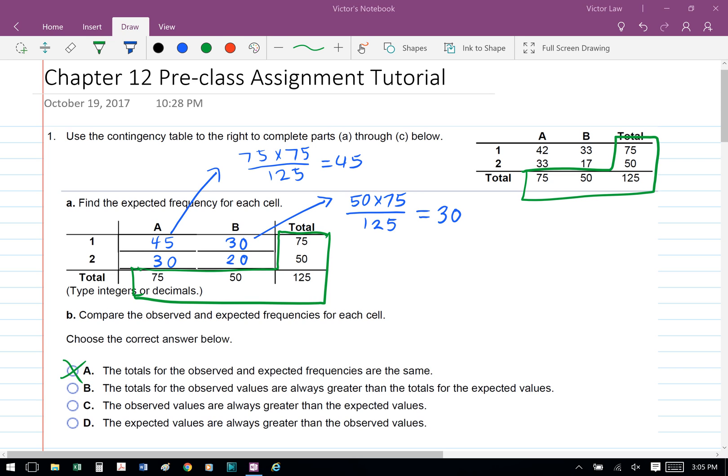We can see that both have 75 and 50 for A and B respectively, and both have 75 and 50 for 1 and 2 respectively as well, and the total for both are 125.